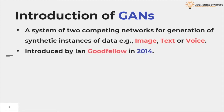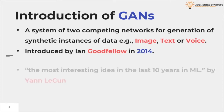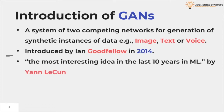GANs were introduced in a paper by Ian Goodfellow and other researchers at the University of Montreal, including Yoshua Bengio, in 2014. Referring to GANs, Facebook's AI research director Yann LeCun called adversarial training the most interesting idea in the last 10 years in machine learning.